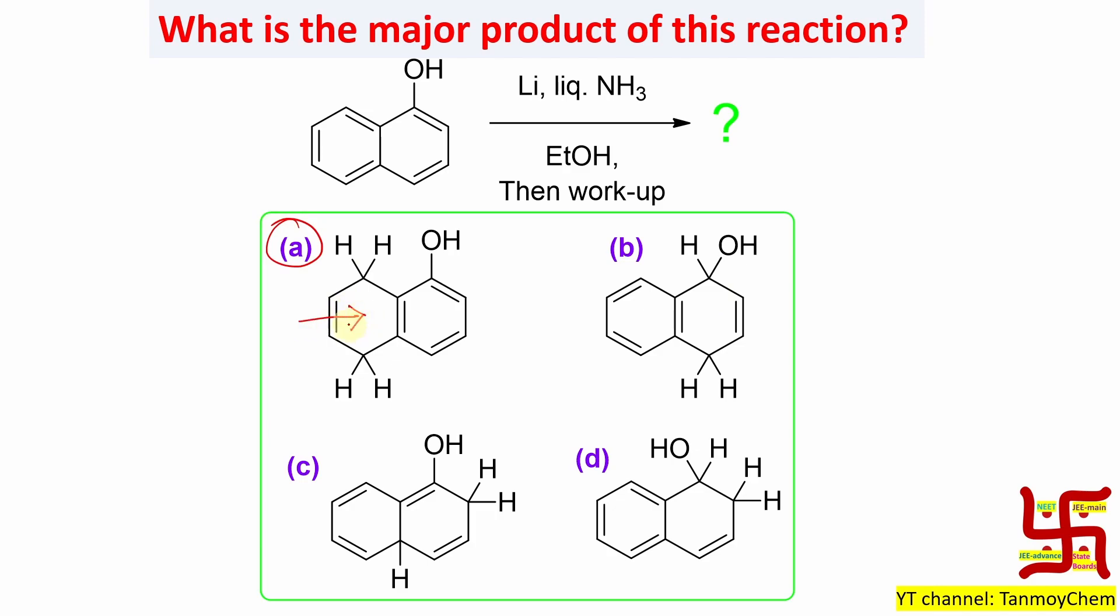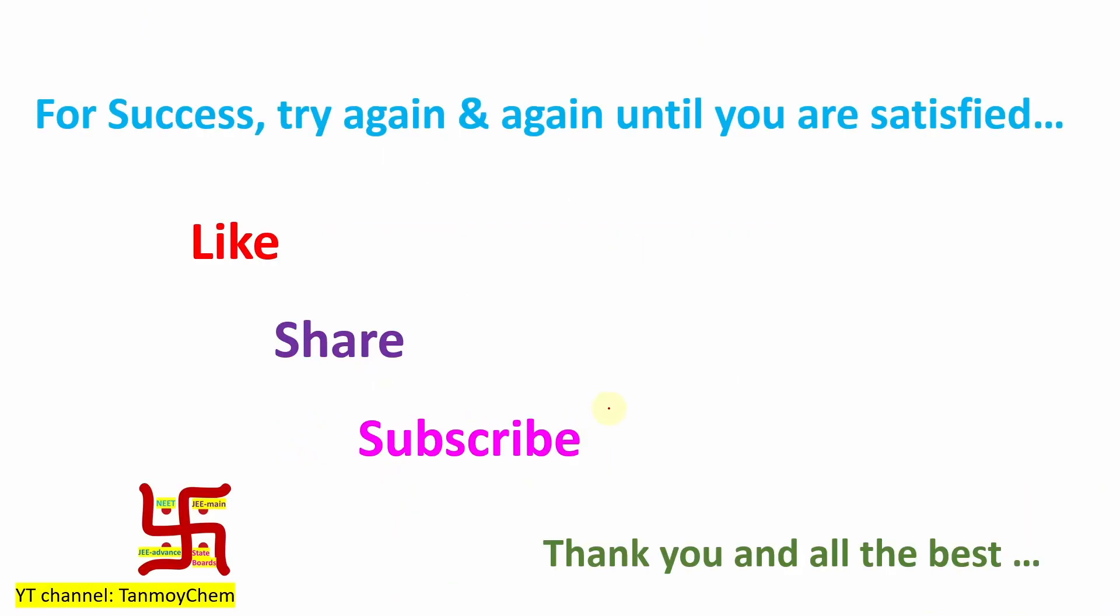Now there is a question - this is called 1,4 reduction, this is called 1,2 reduction. Why not this 1,2? Remember 1,4 addition is more favored in Birch reduction and 1,2 addition does not happen. So this is not the answer. This is the overall discussion. Thanks for watching, see you in my next video. Bye.